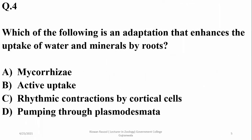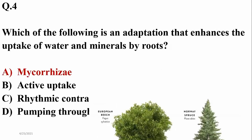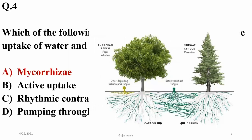Question four: which of the following is an adaptation that enhances the uptake of water and minerals by roots? It's mycorrhizal association, which increases the surface area for absorption of water as well as minerals. So the answer is Alpha.